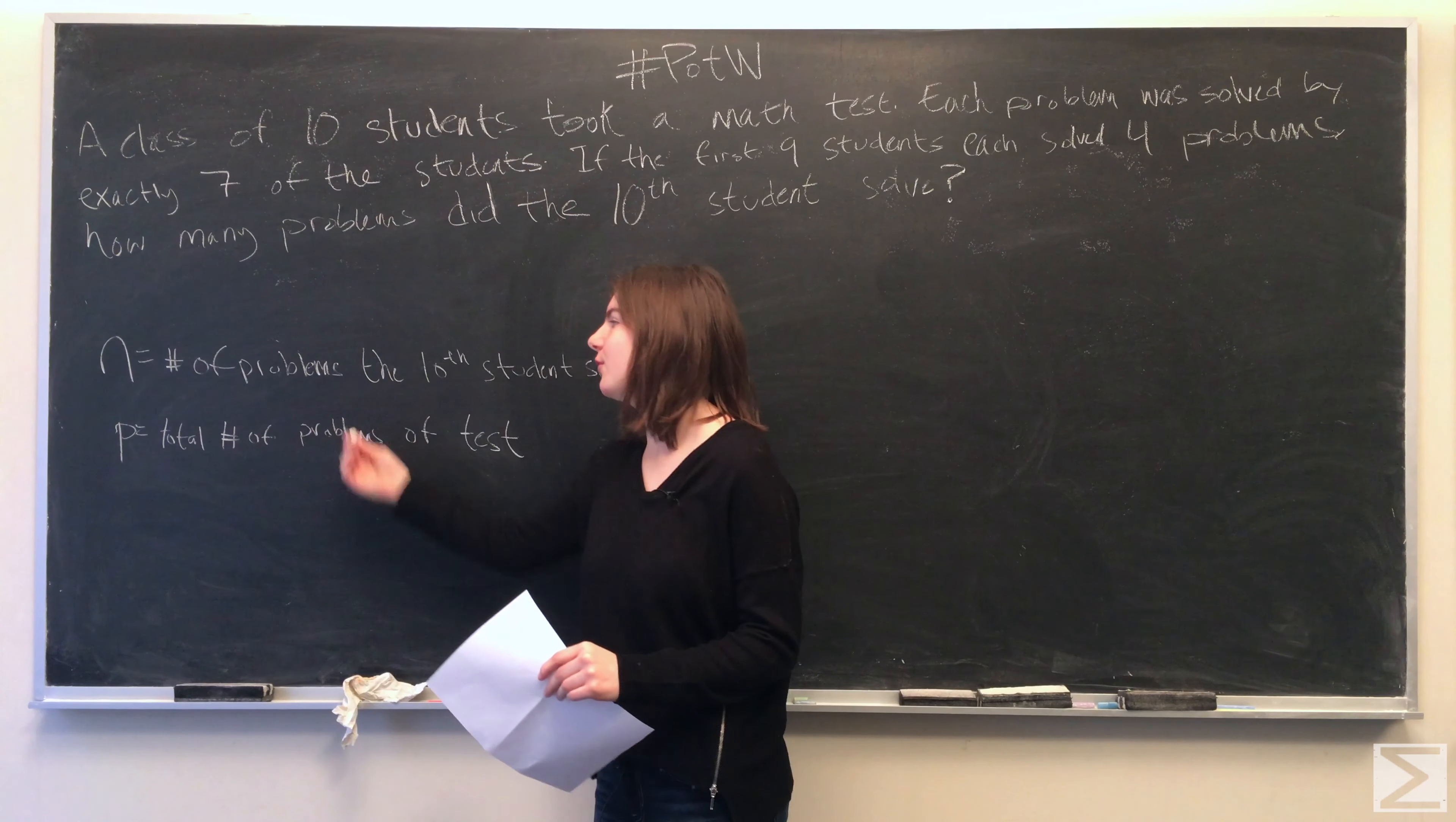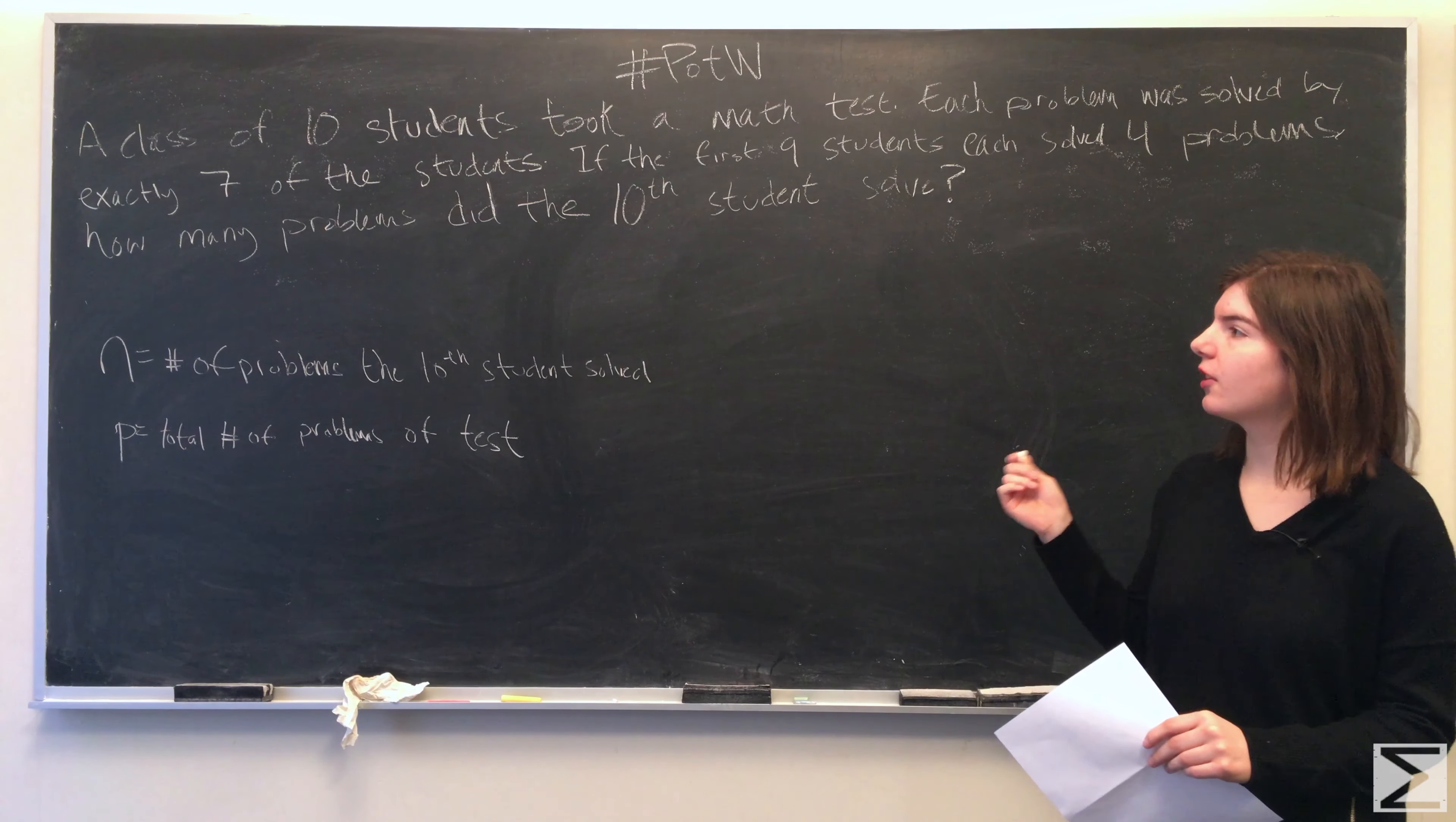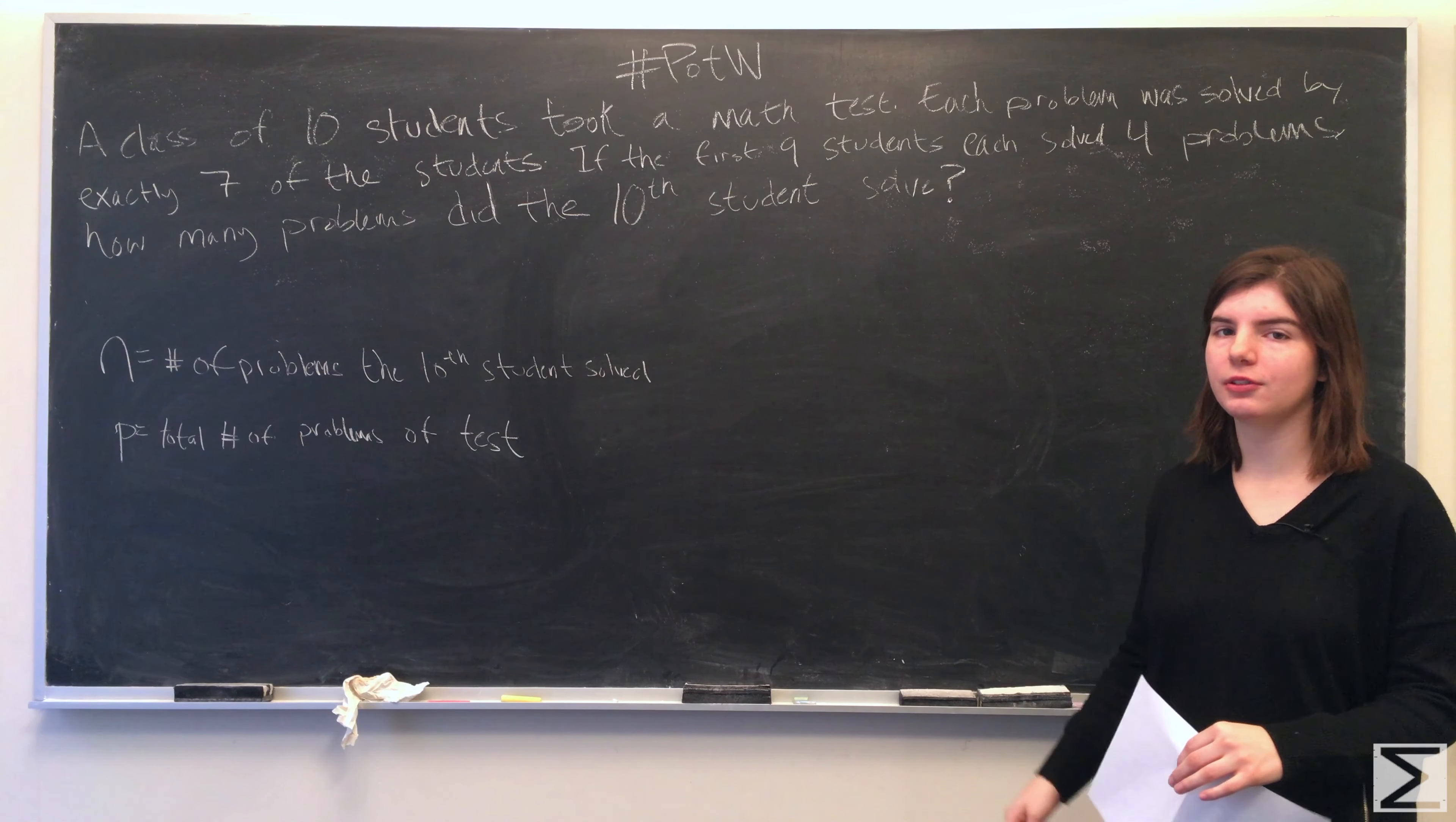So n is what we're solving for. Since each problem was solved by exactly seven of the students, the total number of correct solutions written is equal to 7p.